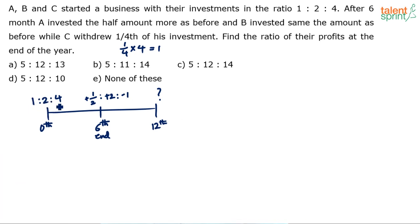So initially they started with 1 rupee, 2 rupees, 4 rupees. After six months, A invested half as before - so half a rupee. B invested the same as before - so same 2 rupees. And C has withdrawn one-fourth of his investment - so he has withdrawn 1 rupee. And this will continue for the next six months, along with the previous investment. So what is the ratio of profits at the end of the year?